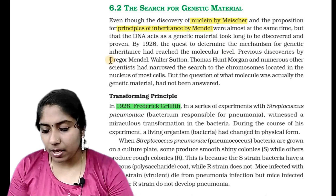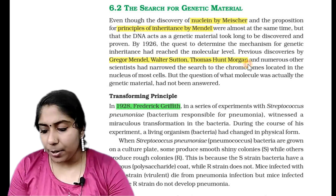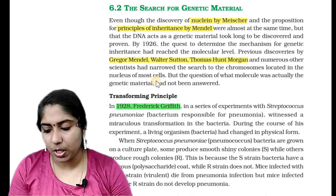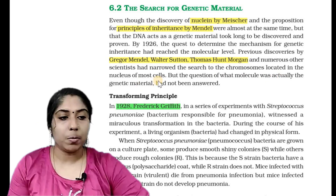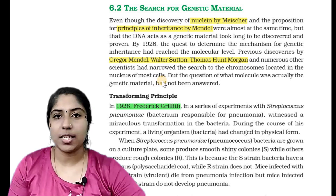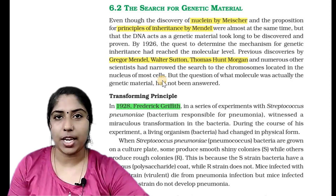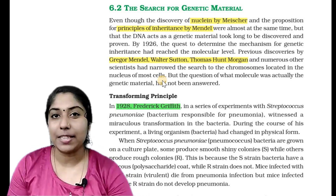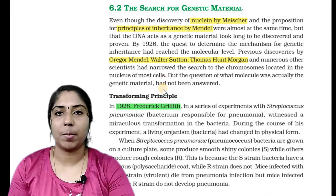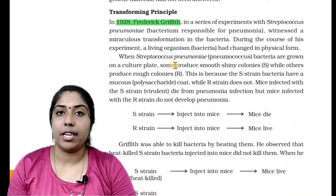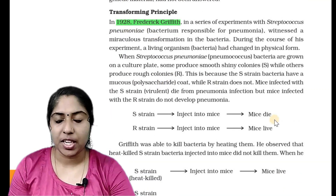Previous discoveries by Gregor Mendel, Walter Sutton, and Thomas Hunt Morgan, and numerous other scientists had narrowed the search to the chromosome located in the nucleus of most cells. At that time, Frederick Griffith, in 1928, did an experiment.